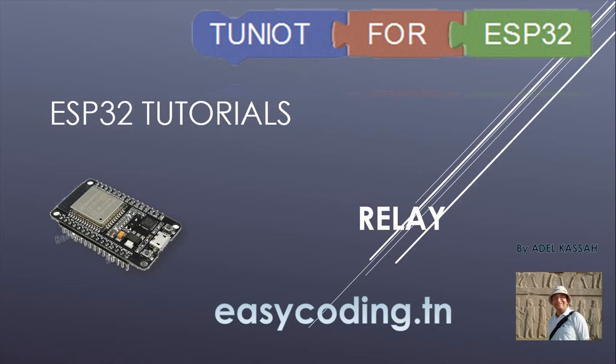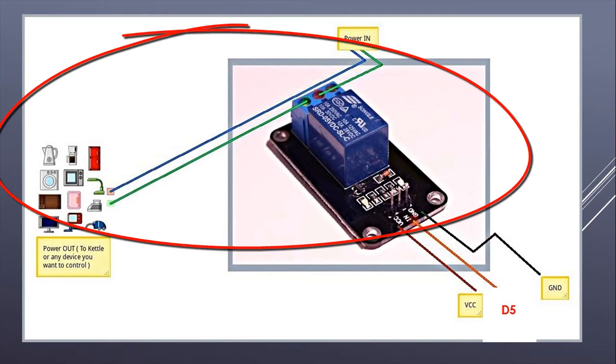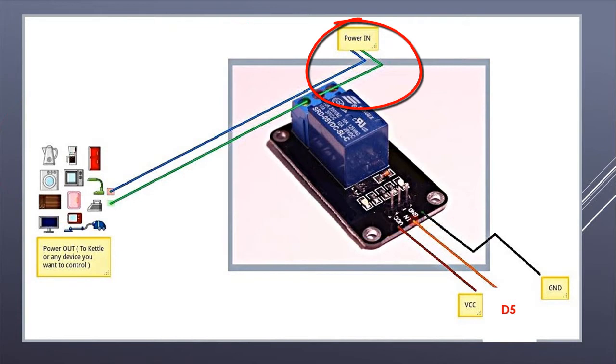This component is useful to control high voltage devices like a lamp, a fan, or a coffee machine. This is our relay. This part should be connected to the high voltage part. On the right side, it is connected to the power supply. On the left side, it is connected to the device that you want to control, like a lamp.